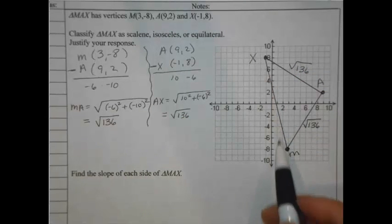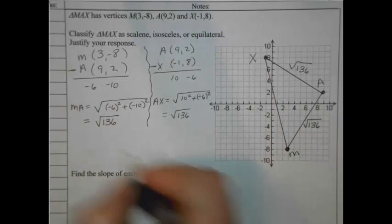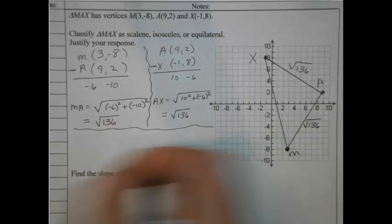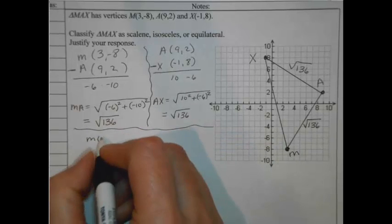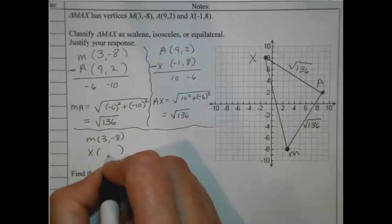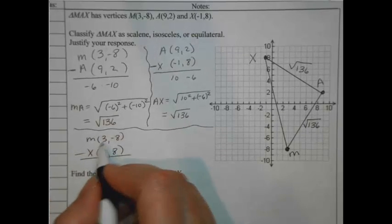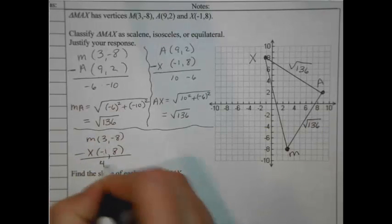Do I have a third? Can I call this equilateral? It doesn't look like it, but we're going to have to justify. So let's prove it. Alright, so we're going from M to X. Let's do a point stack for MX. M is (3, -8), and X is (-1, 8). Subtract them. 3 minus -1 is 4. And -8 minus 8 is -16.